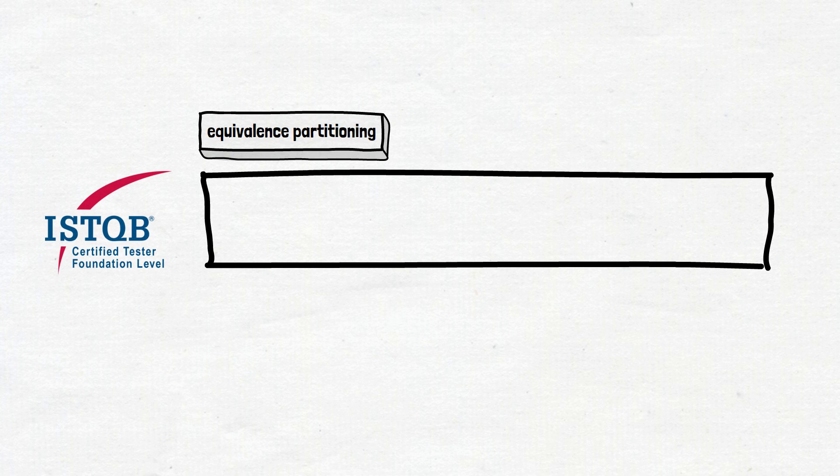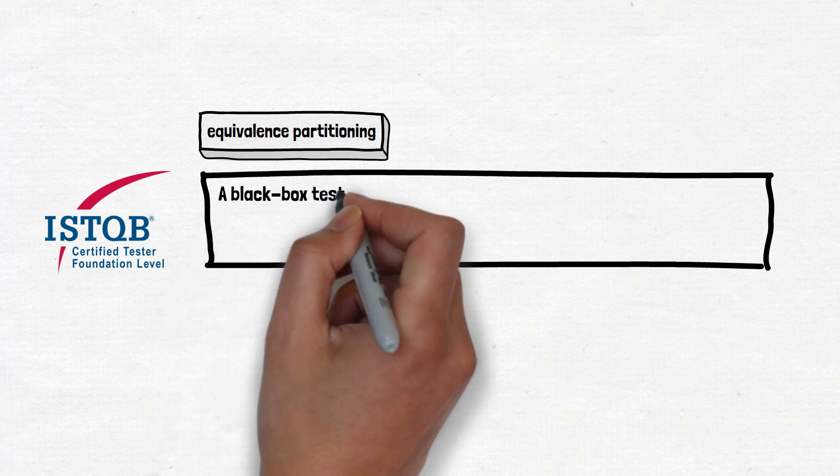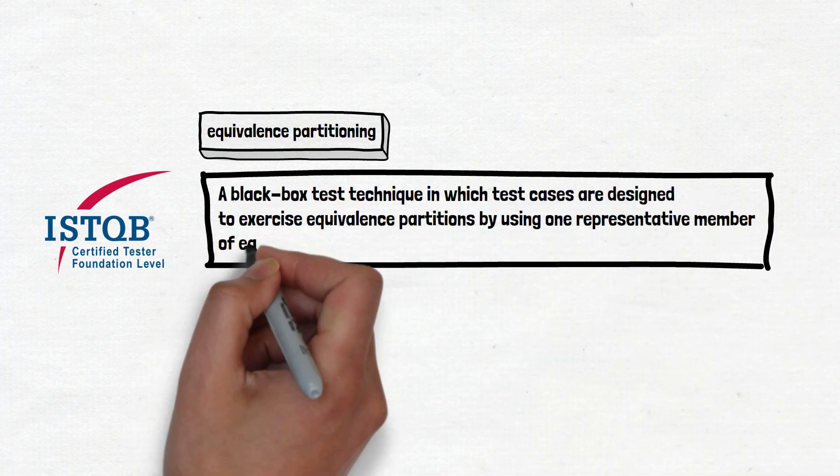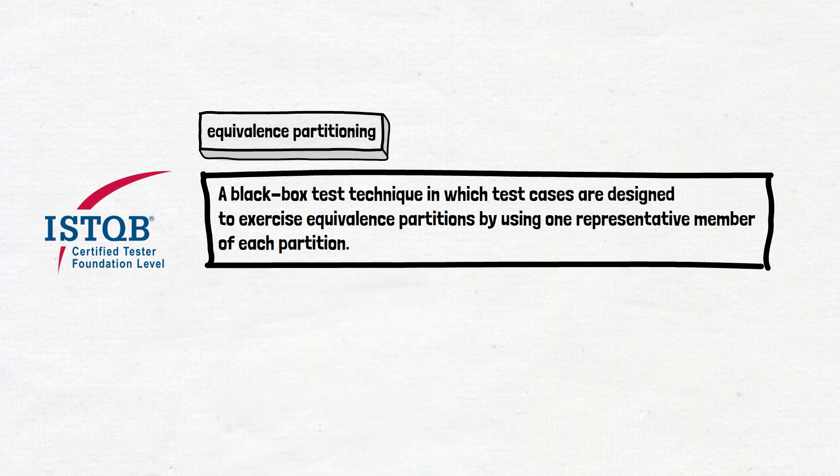If you check the ISTQB glossary, you can find out that equivalence partitioning is a black box test technique in which test cases are designed to exercise equivalence partitions by using one representative member of each partition. Yes, we know that it sounds very theoretical.